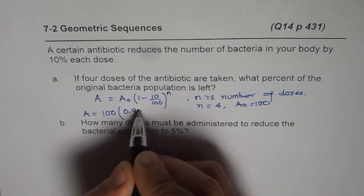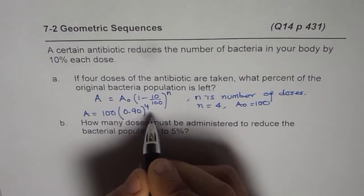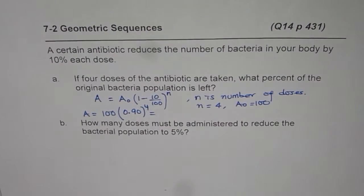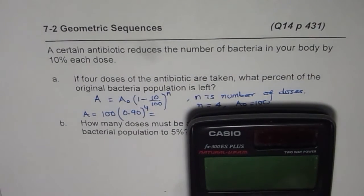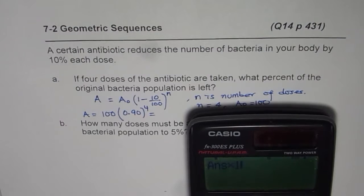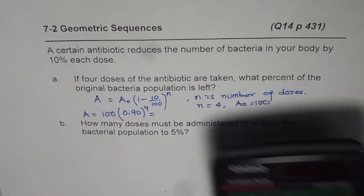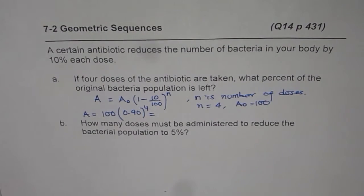Now we can calculate this value using calculator. So we have 0.9 to the power of 4 times 100, so that gives us in decimals 65.61 percent.